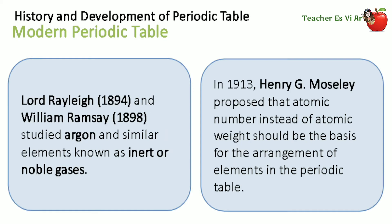Lord Rayleigh and William Ramsey studied argon and similar elements known as inert or noble gases. Henry G. Moseley then proposed that atomic number, instead of atomic weight, should be the basis for the arrangement of elements in the periodic table.